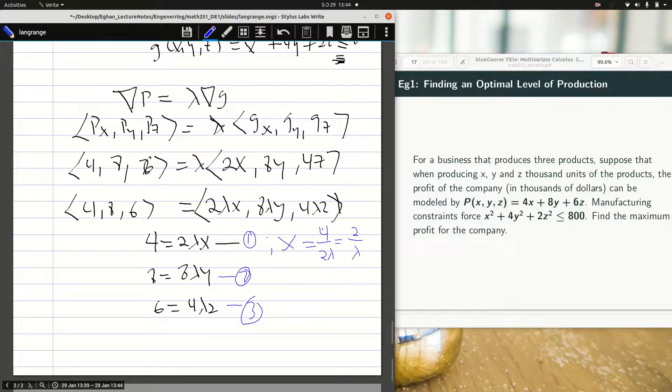From equation 2, my Y can be set to 8 over 8 lambda, which is the same as 1 over lambda. And from equation 3, my Z can be set to 6 over 4 lambda, which is the same as 3 over 2 lambda.